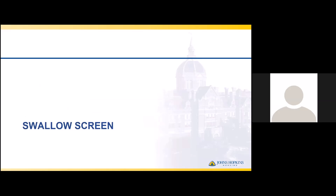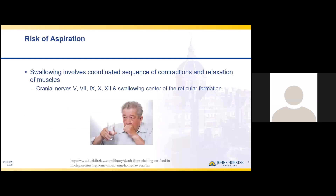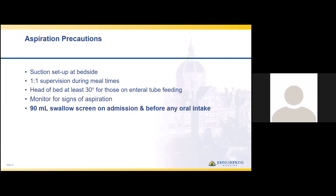The last of the three interventions is the swallow screen. After a stroke, patients are at greater risk of aspiration. Swallowing involves a coordinated sequence of contractions and relaxation of muscles controlled by cranial nerves 5, 7, 9, 10, and 12, along with the swallowing center of the reticular formation. To set up a safe bedside environment, ensure suctioning is available, provide one-to-one supervision during meals if appropriate, keep the head of the bed at least 30 degrees for those on enteral tube feeds, and ensure patients who can eat are sitting up close to 90 degrees.